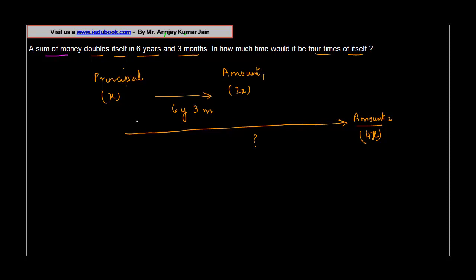Now, the amount is equal to principle plus simple interest. So 2x is equal to x plus simple interest, which implies that the simple interest is equal to 2x minus x, or x.